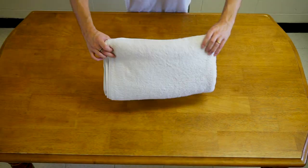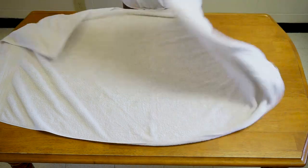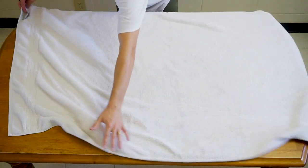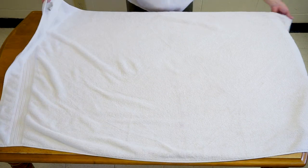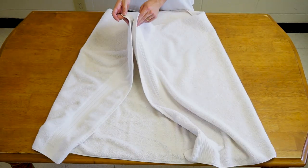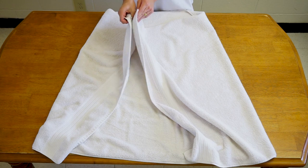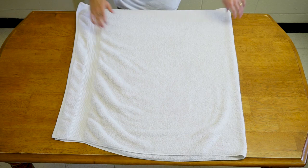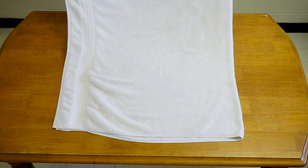Last but not least, we got the rectangle fold. So go ahead and lay your towel out again, tag side facing up. Pull your corners together, folding it in half, tuck your tag, and smooth it out over your surface.